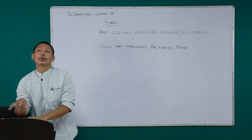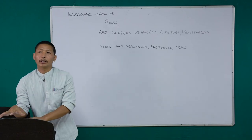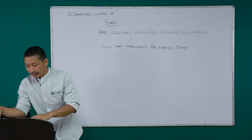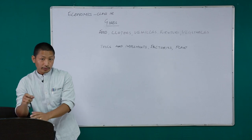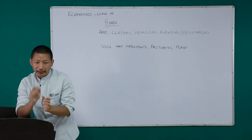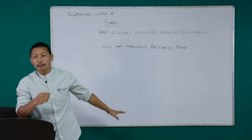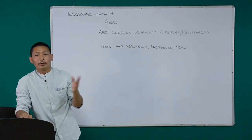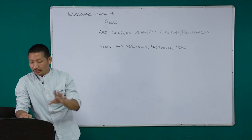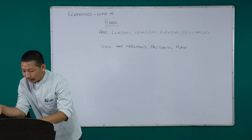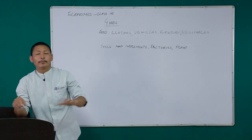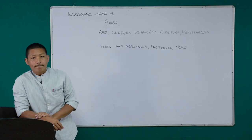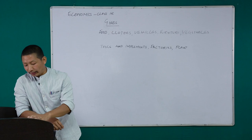Those goods which are completely used up at the time of use are called non-durable consumer goods. The matchstick that you lit to burn a fire is not coming back anymore. The cigarette that someone smokes — the same cigarette stick is not coming back. These are examples of non-durable consumer goods. I hope that is clear.